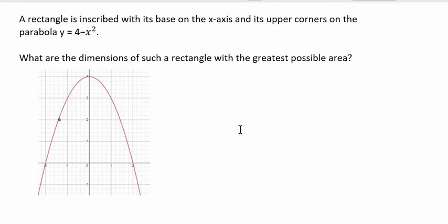For example, suppose that the upper left corner of the rectangle was here and the upper right part of the rectangle is here. If I draw a rectangle whose upper corners are points on the parabola and its base lying along the x-axis, that would look like this.